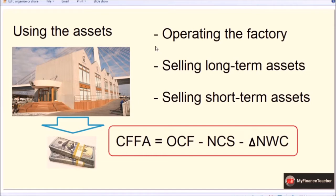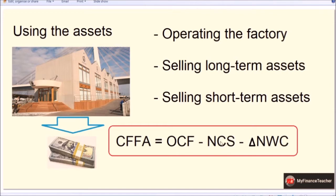If you have some assets, how can you generate cash? One way is through normal operating activities — just running the factory — which is captured by OCF, operating cash flow. You could also generate cash by selling assets. We'll look at selling long-term assets separately, because that includes depreciation, captured by net capital spending. Buying long-term assets increases what we have, which is the opposite of selling, so we place a negative sign there.